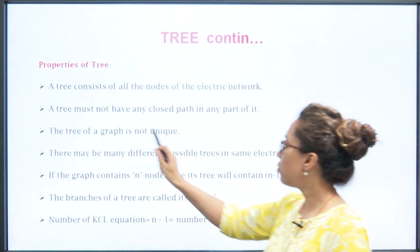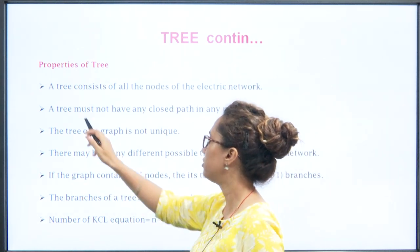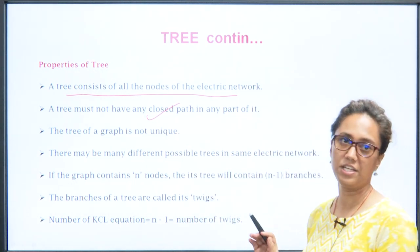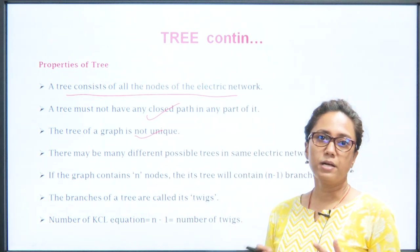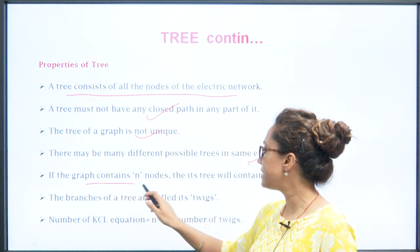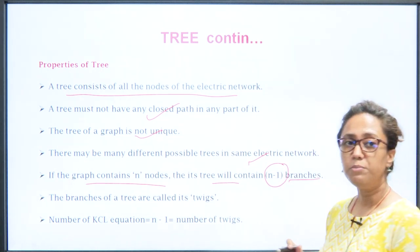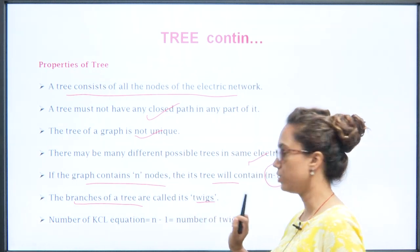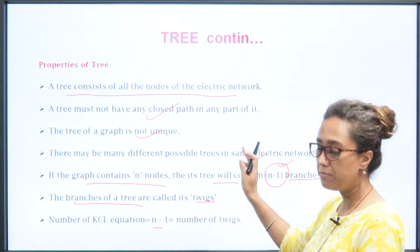These are the few properties of a tree. A tree, as already mentioned in the previous lecture, consists of all the nodes in the electrical network and does not have any closed path in it. The tree of a graph is not unique — it can be different. It is possible to make many different trees from the same electrical network. If the graph contains n number of nodes, the tree will have n minus 1 branches, called twigs. The number of KCL equations is n minus 1, equal to the number of twigs.